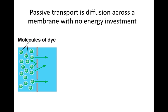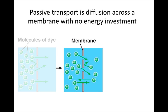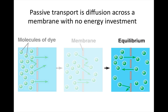Let's observe this example of diffusion. First, notice the high concentration of the green dye molecule to the left of the membrane. Diffusion allows for the movement of the molecules to pass through the membrane into a lower concentrated area until an equilibrium is met.